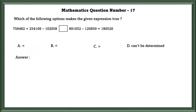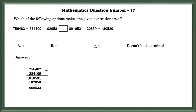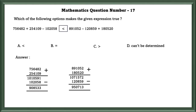Mathematics question number 17: Which of the following options makes the given expression true? First, we will add the two numbers and subtract the third number — we get 9,98,533. Similarly, on the other side, we get 9,50,713. The option we have to select is that statement 1 is less than statement 2.